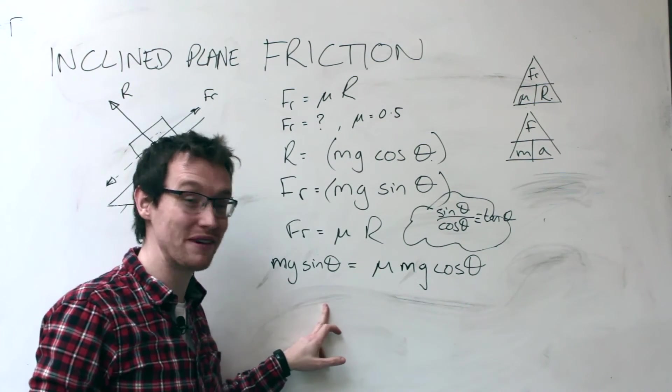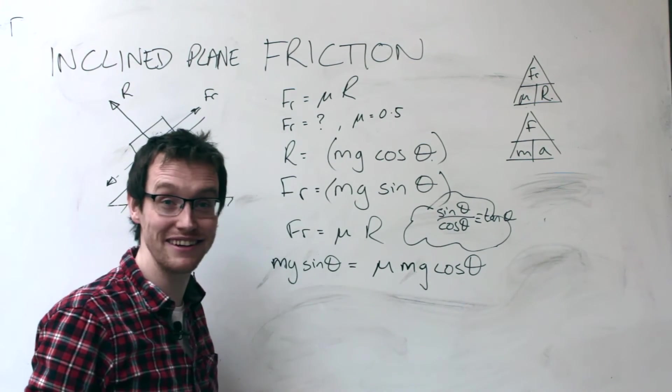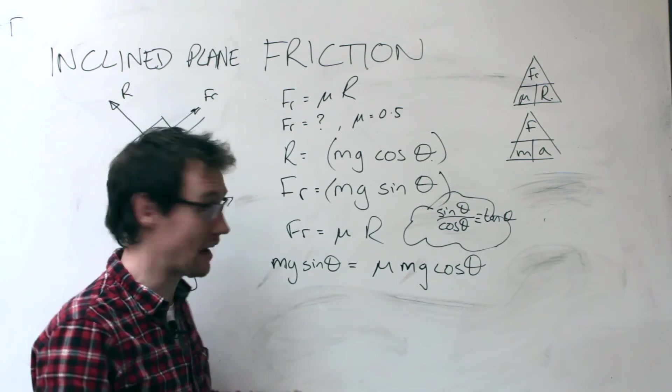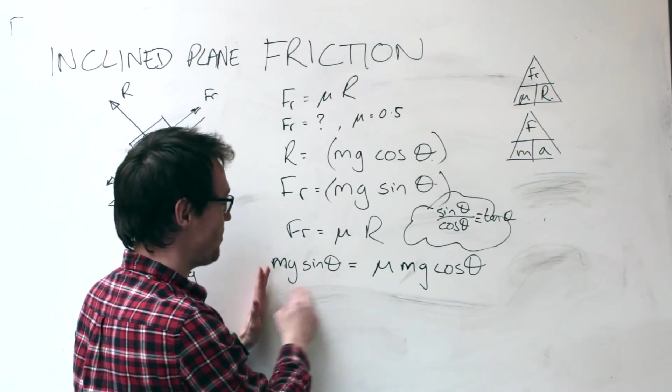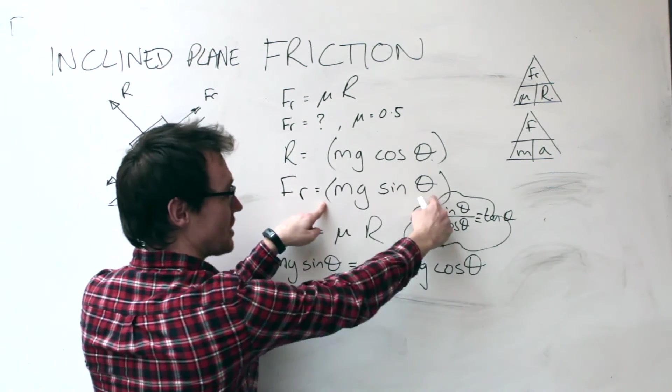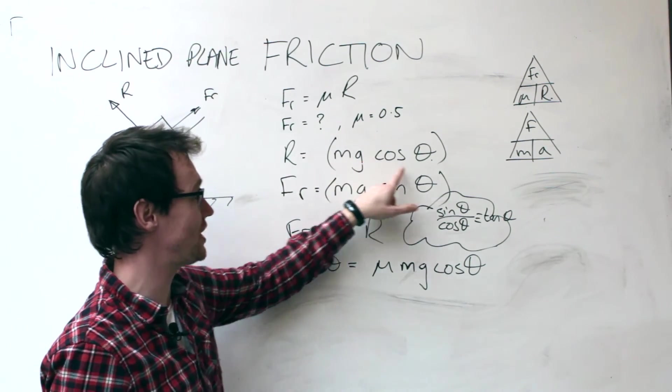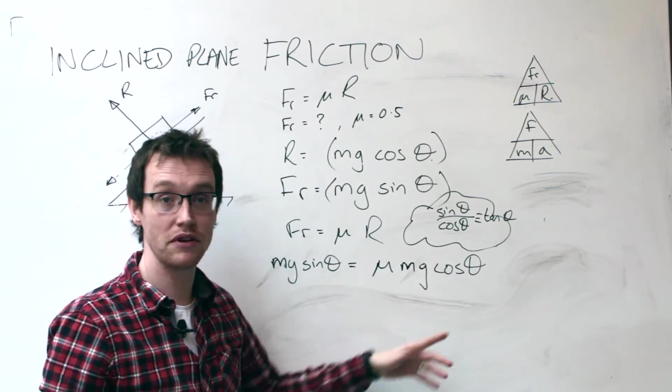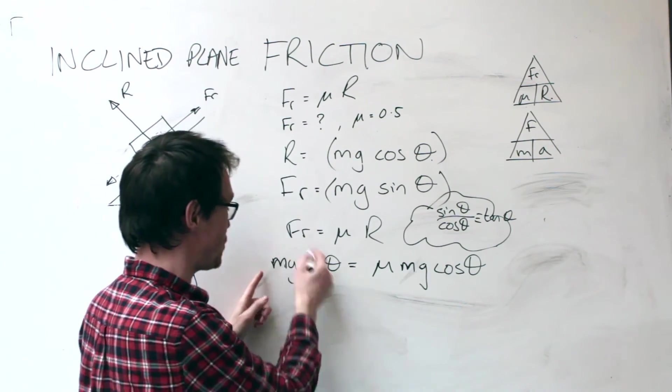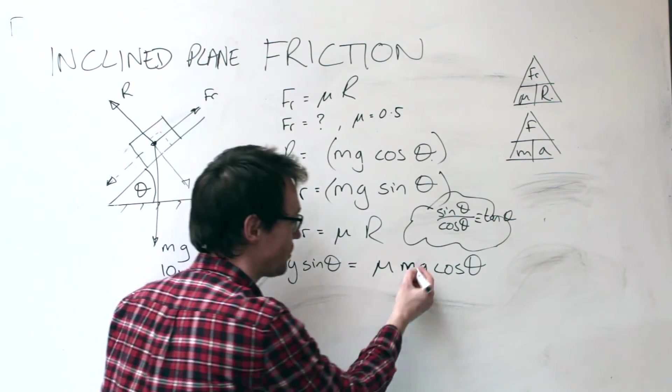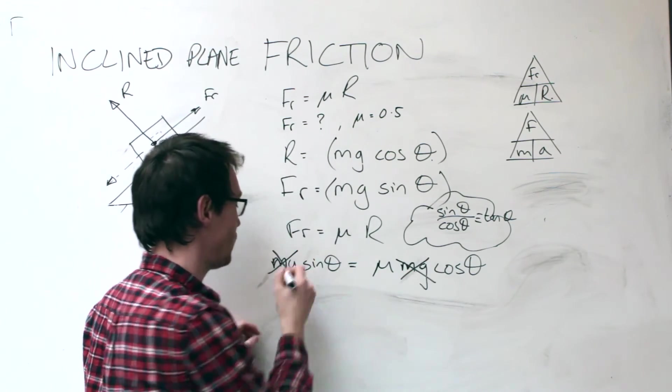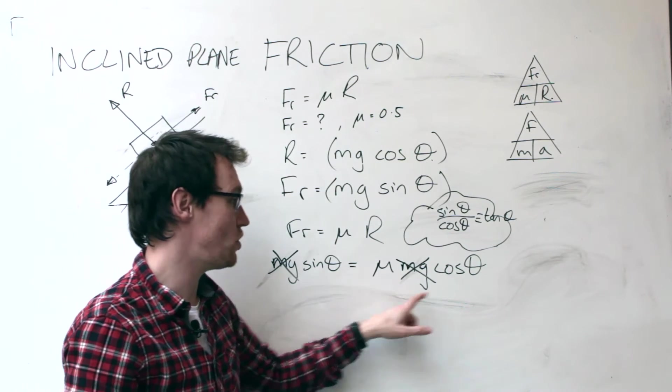I just had to re-record this bit because I went off the bottom of the video frame. I've got a statement here where I've got mg sin theta equals mu R. So mu times R, R is given by mg cos theta, and I can cancel some things now. I've got mg and mg on this side, so both of those things can go. I've got sin theta equals mu cos theta.